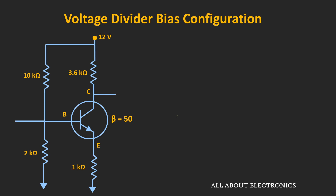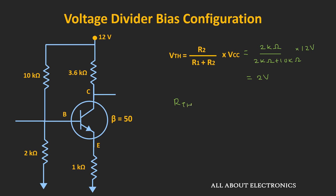So let's take one example and see how the operating point changes in this voltage divider biasing configuration if there is a variation in β. Using the exact analysis method, first let's find the Thevenin's equivalent voltage and resistance. The Thevenin's equivalent voltage Vth can be given as R2 divided by R1 plus R2 times Vcc, which is equal to 2kΩ divided by 2kΩ plus 10kΩ times 12V, that is equal to 2V.